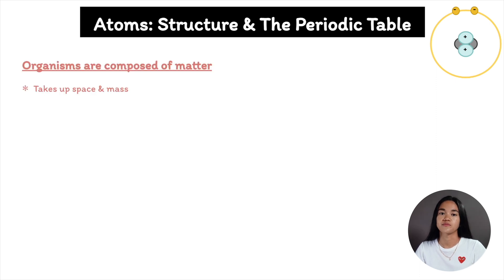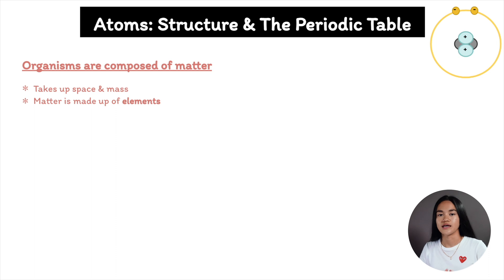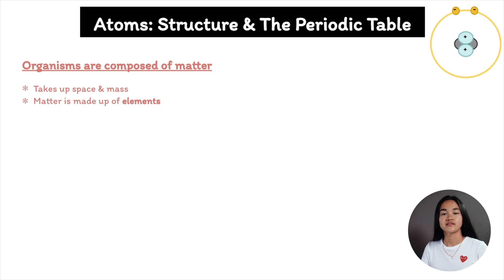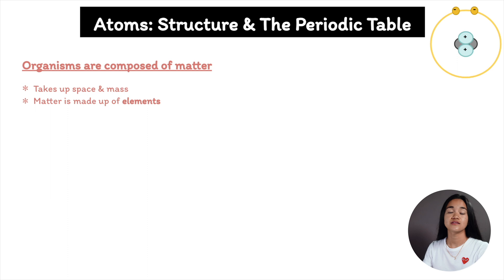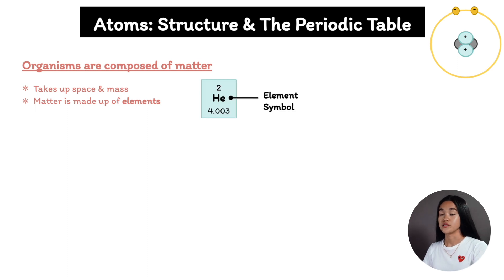Organisms are composed of matter, which is anything that takes up space and has mass. Matter can be metals, gases, oils, or living organisms. Matter is made up of elements — an element is a substance that can't be broken down to other substances by chemical reactions. Examples include carbon, oxygen, and copper. There are 92 naturally occurring elements and each has a symbol, usually the first letter or two of its name derived from Latin or German. An example is helium with the element symbol He.